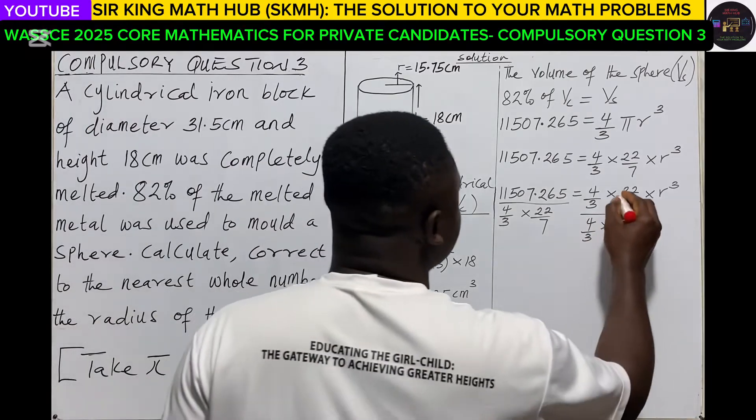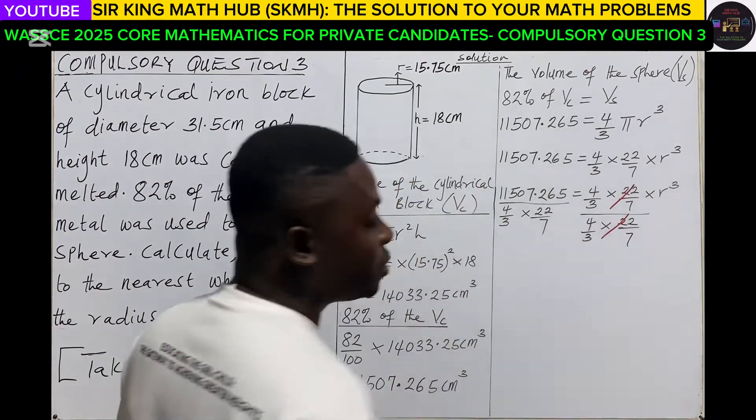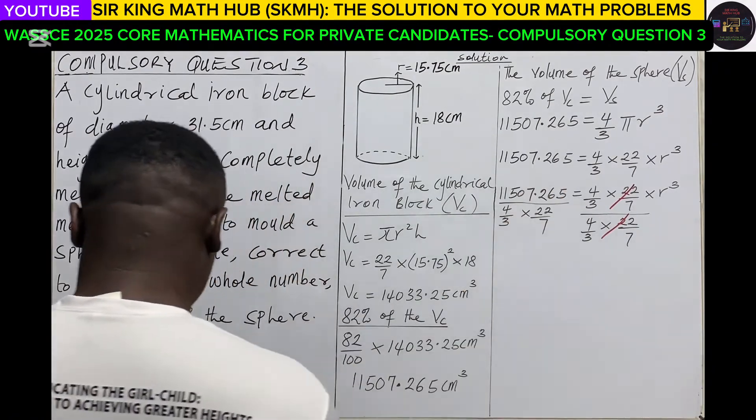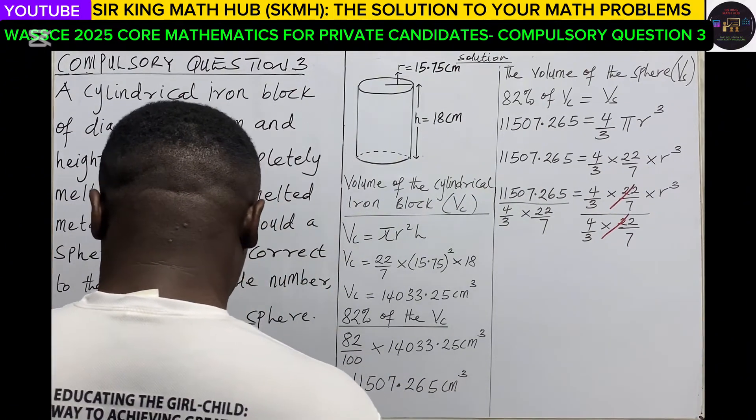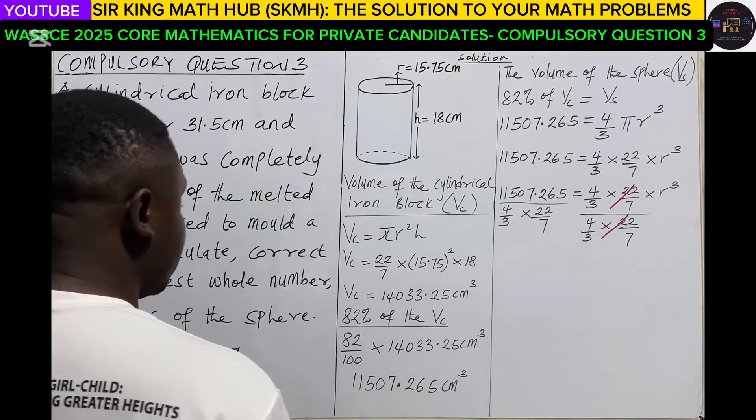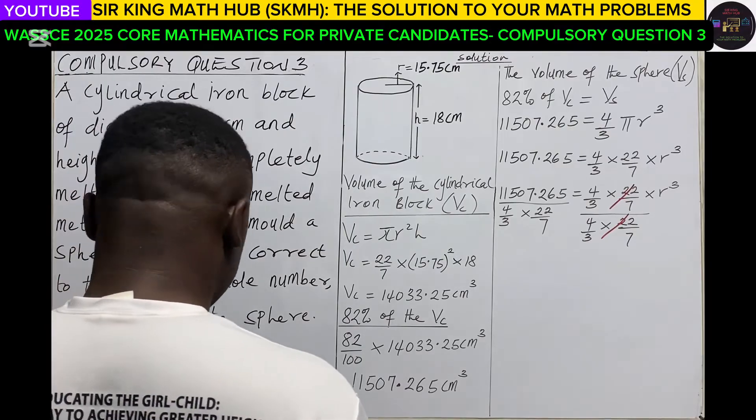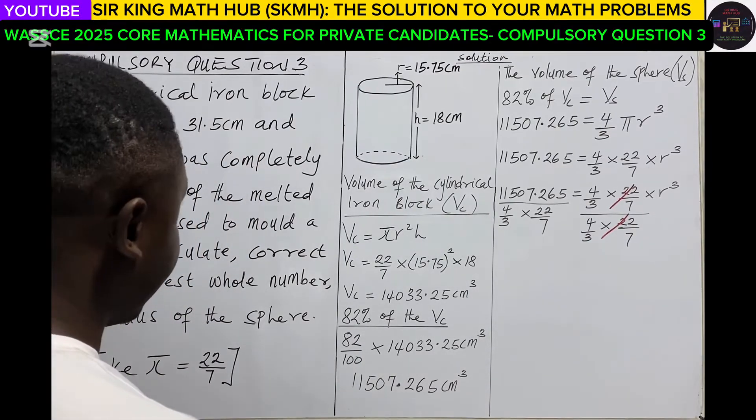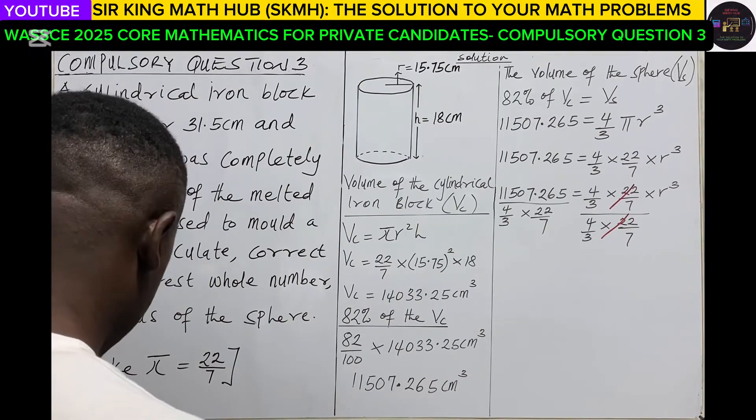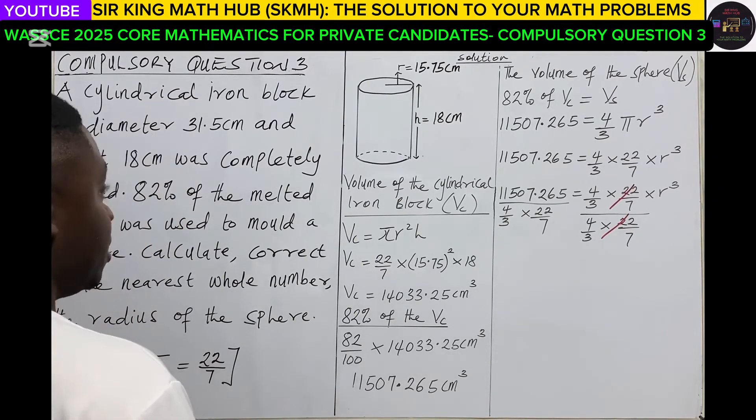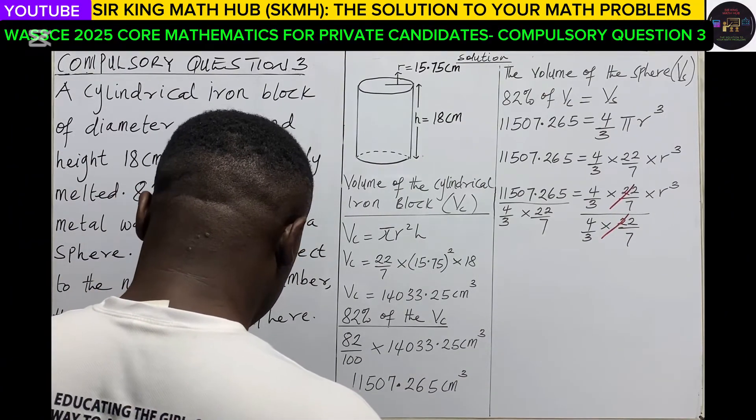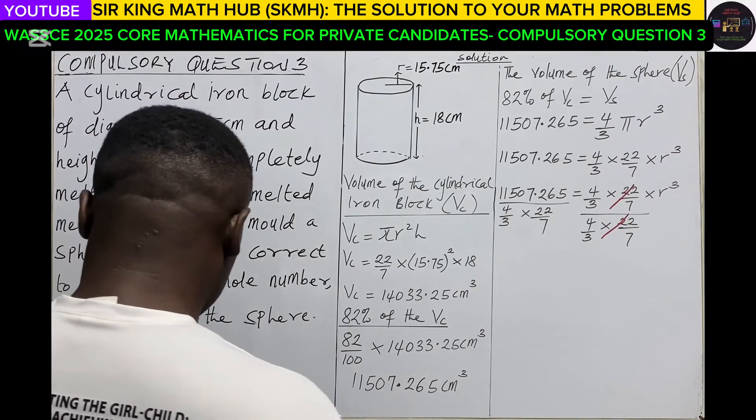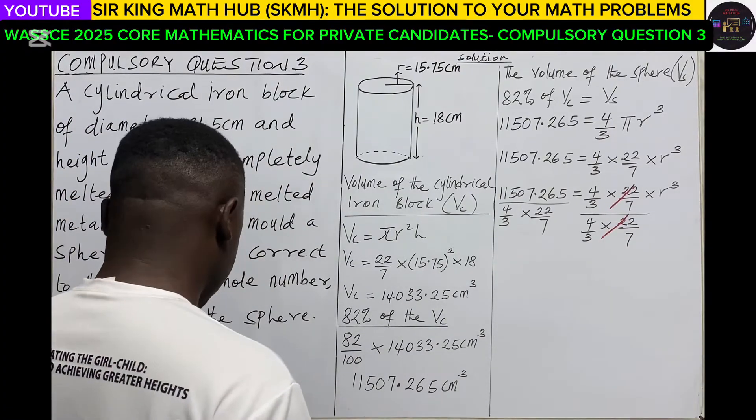So you can see that this will cancel out. Let's evaluate this on the calculator. For the numerator we have 11507.265, and then the denominator we have 4/3 multiplying 22/7.